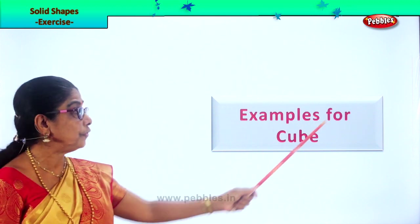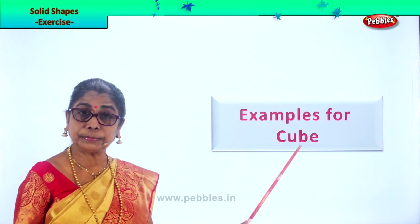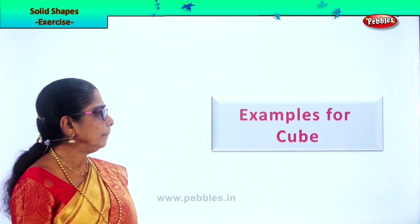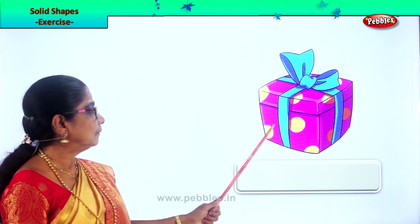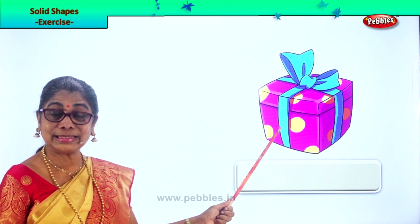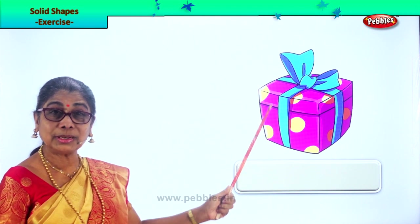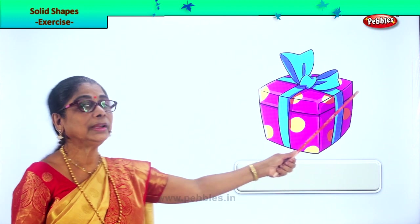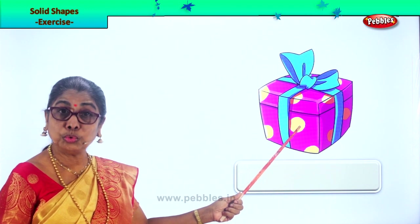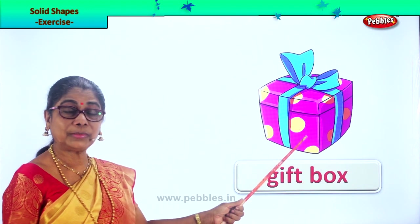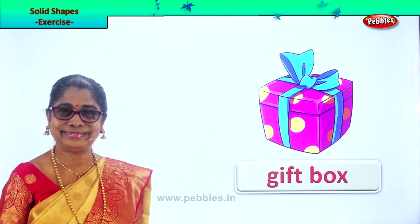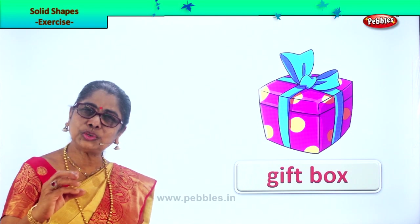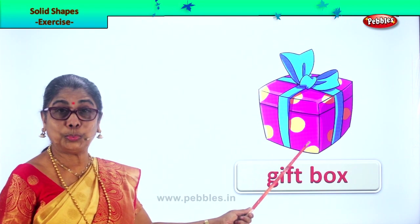Now let's look at examples for cube. We are going to look at some examples for cube. Look at this — you get gifts; gift boxes you've seen, jewel boxes. This is a gift box. Gift boxes are cube-shaped. Look at some of your gift boxes; especially the jewel boxes, they will be the shape of a cube. Good.